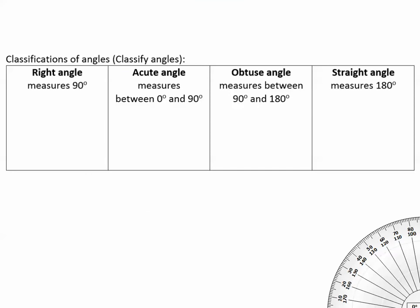There are different ways to classify an angle. Different classifications of the angle. Classification means the type of angle. There are four different types that we're going to talk about. There is a right angle, where it's an angle that measures 90 degrees.